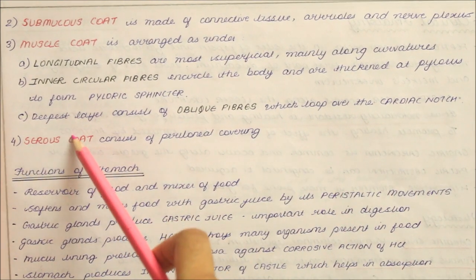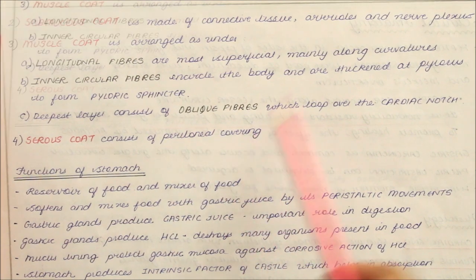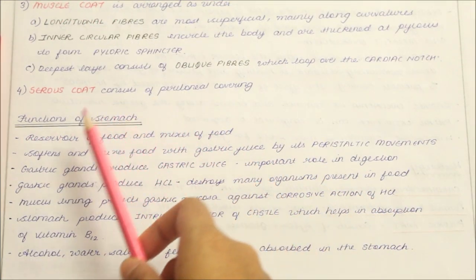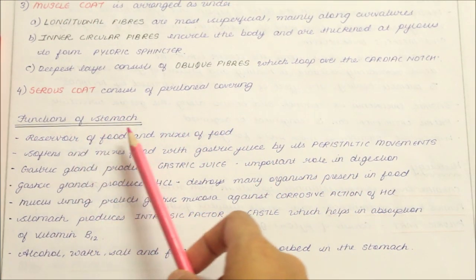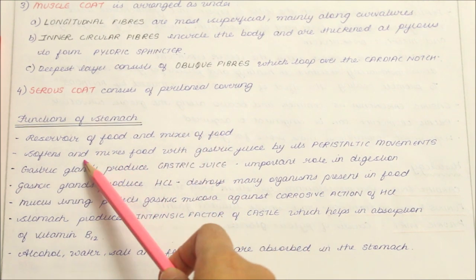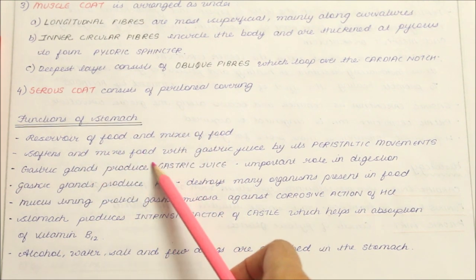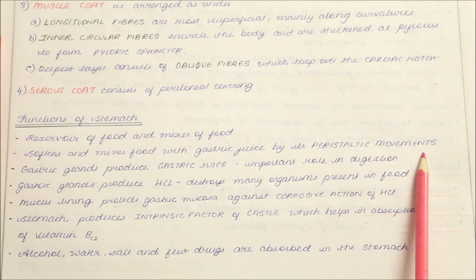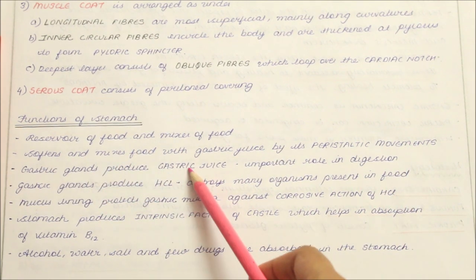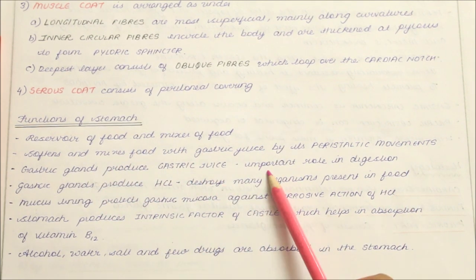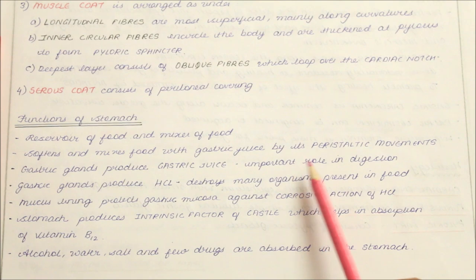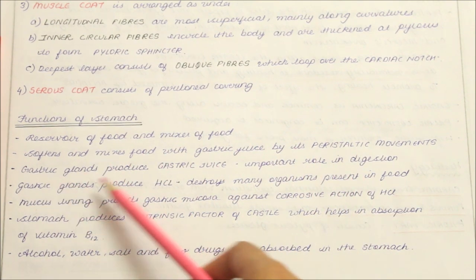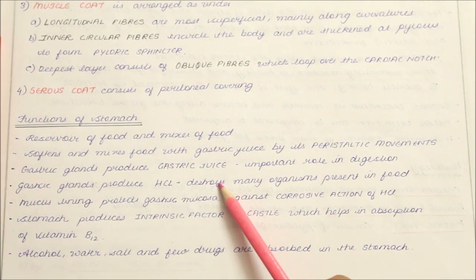The functions of the stomach: it is a reservoir and mixer of food, softening and mixing food with gastric juice by peristaltic movements. Gastric glands produce gastric juice which plays an important role in digestion.